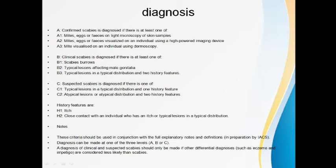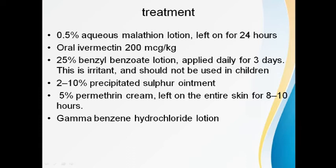Treatment of scabies depends on anti-parasitic agents, most of which are organophosphorus compounds or neurotoxins to the mite's nervous system. Most commonly, five percent permethrin cream is used, applied below the neck over the affected areas and kept overnight, then washed off in the morning. Permethrin works by blocking acetylcholine receptors, leading to respiratory failure and death of the mite.